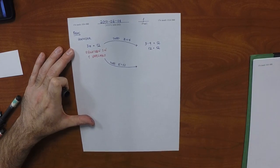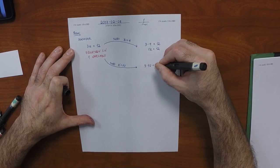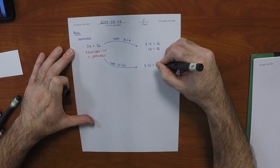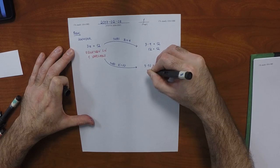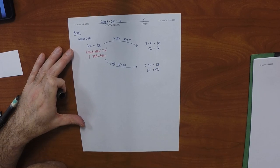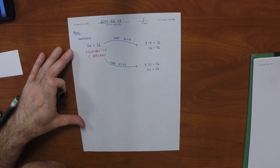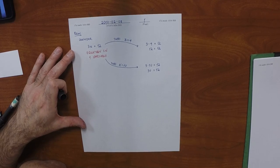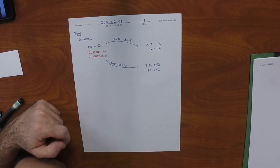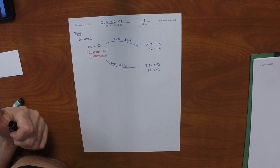What if we substitute in 10? That's a legitimate operation, so then we would get 3 × 10 = 12. The new left-hand side is 30, so 30 = 12. Is that an equation? Yes. What is its logical value? False. It is nevertheless an equation — its logical value is false.